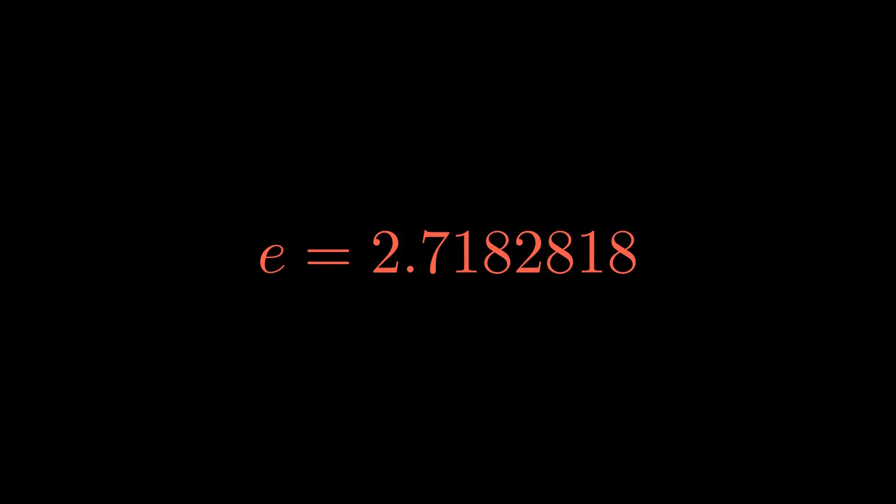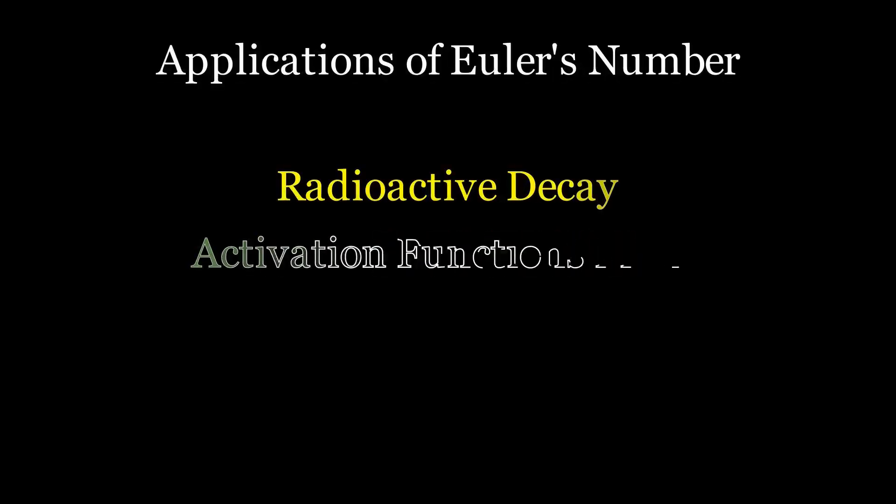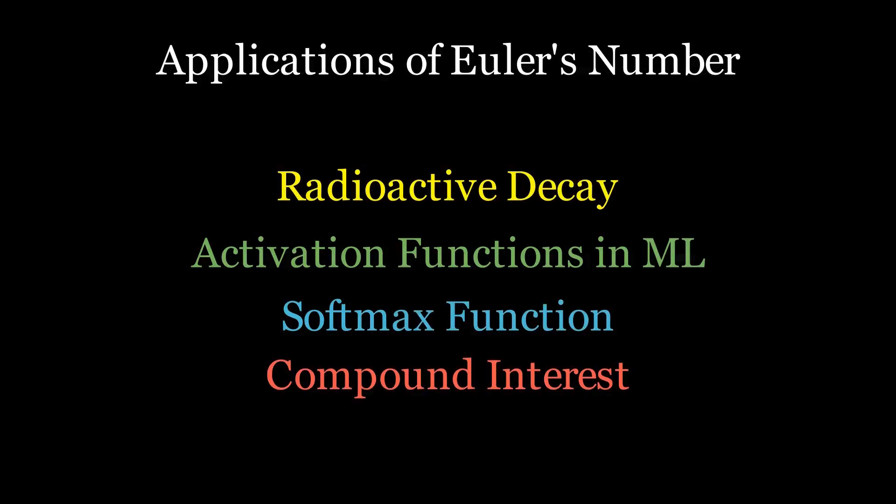This is why e appears in finance compound interest, physics radioactive decay, AI gradient descent, and even neural networks. It governs processes where change builds upon itself continuously.